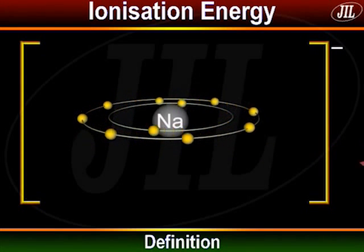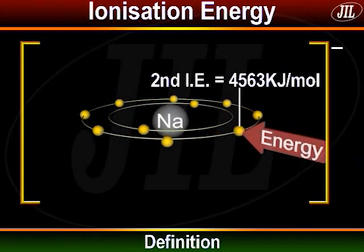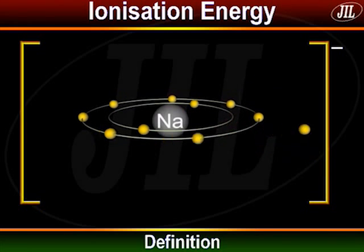The energy required to remove a second electron is called the second ionization energy. After the removal of the first electron, the atom gains a unit positive charge, and the nuclear charge on the remaining electrons increases. Therefore, the removal of the second electron requires a larger energy compared to the first one. In the case of sodium, it is 4563 kilojoules per mole, and the sodium ion then acquires a positive charge of plus 2.